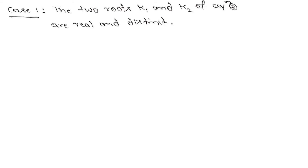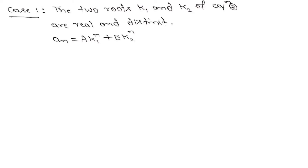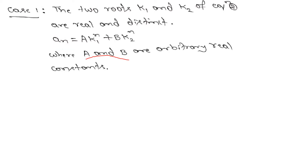Let us see the solution part. We have three different cases here. In the first case, suppose the roots K1 and K2 of the quadratic equation are real and distinct. Then the solution An of the second order homogeneous recurrence relation is given by An equals A·K1 to the power n plus B·K2 to the power n, where A and B are arbitrary real constants.